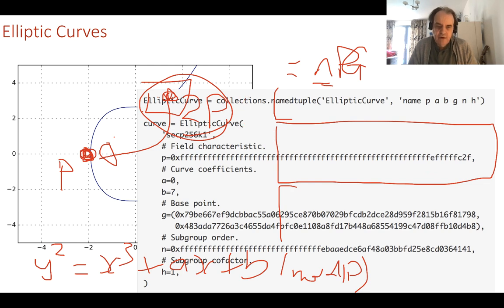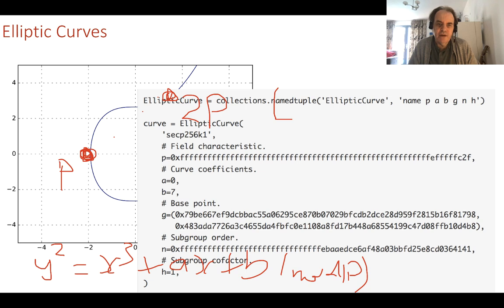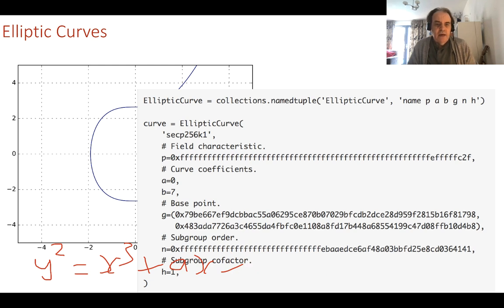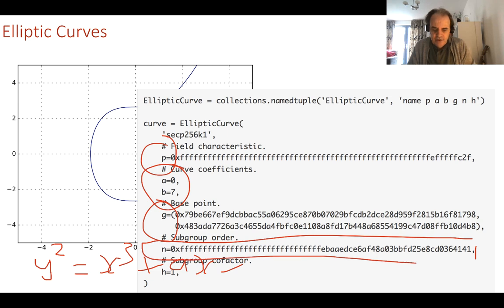So an example of an elliptic curve to show some of the parameters that we have. This is the one that's used in Bitcoin. What we have is an a and a b value, we have our prime number, and we have our base point. In this case, that's the basic definition of the curve, and this value here gives us the number of points that we can have on the curve. This becomes what's called a finite field, and the finite field is constrained by this prime number here.